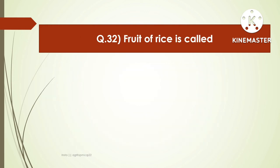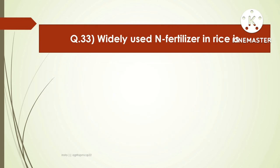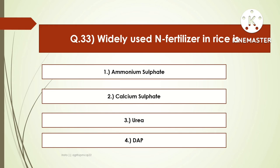The next question is: the fruit of rice is called — options are grain, cereal, or caryopsis. The right answer is caryopsis. Caryopsis is the fruit type of rice. Achene is the fruit type of sunflower and safflower. The next question is: the widely used nitrogen fertilizer in rice is — options are ammonium sulfate, calcium sulfate, urea, or diammonium phosphate. The right answer is ammonium sulfate. Ammonium sulfate is the widely used fertilizer in rice.